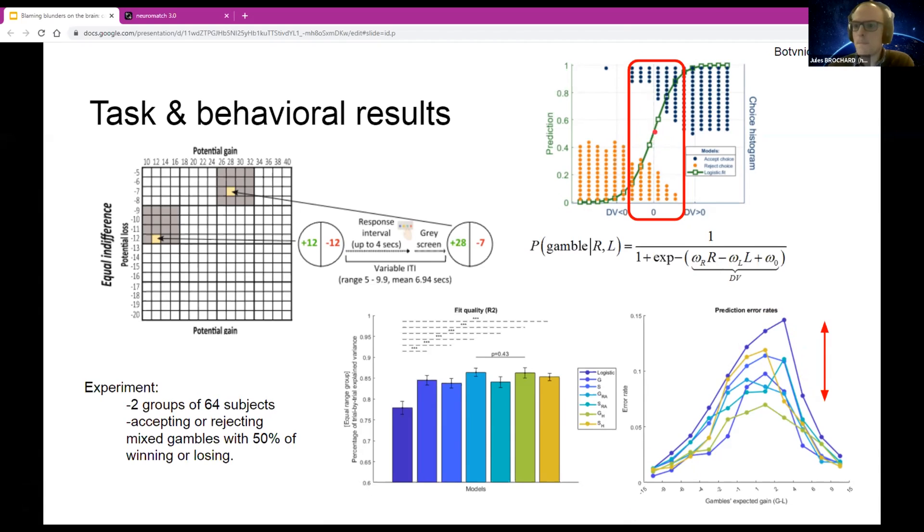It just reflects that around the indifference points, people either accept or reject a gamble with the same difference or weighted difference between gain and loss. I interpret the fact that all curves show a bell-shaped form. To me, this indifference point actually reflects the point where subjects just don't know and either accept or reject.